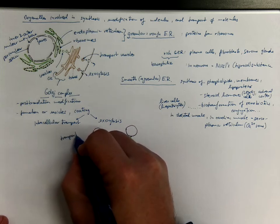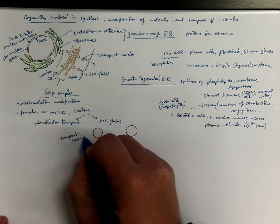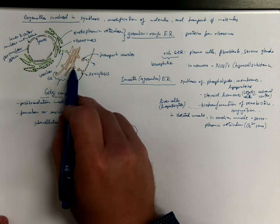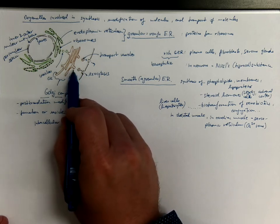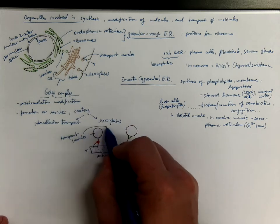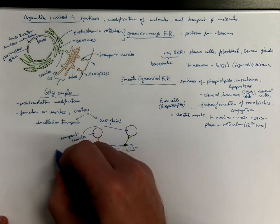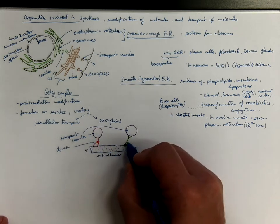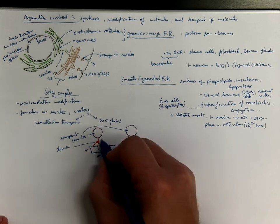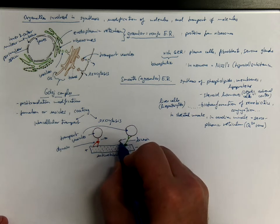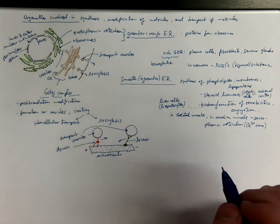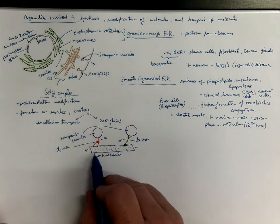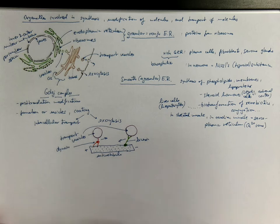So, transport vesicles that are released from the trans phase of the Golgi complex and the molecular motors such as dynein or kinesin transporting in opposite directions using the microtubules as railroads.